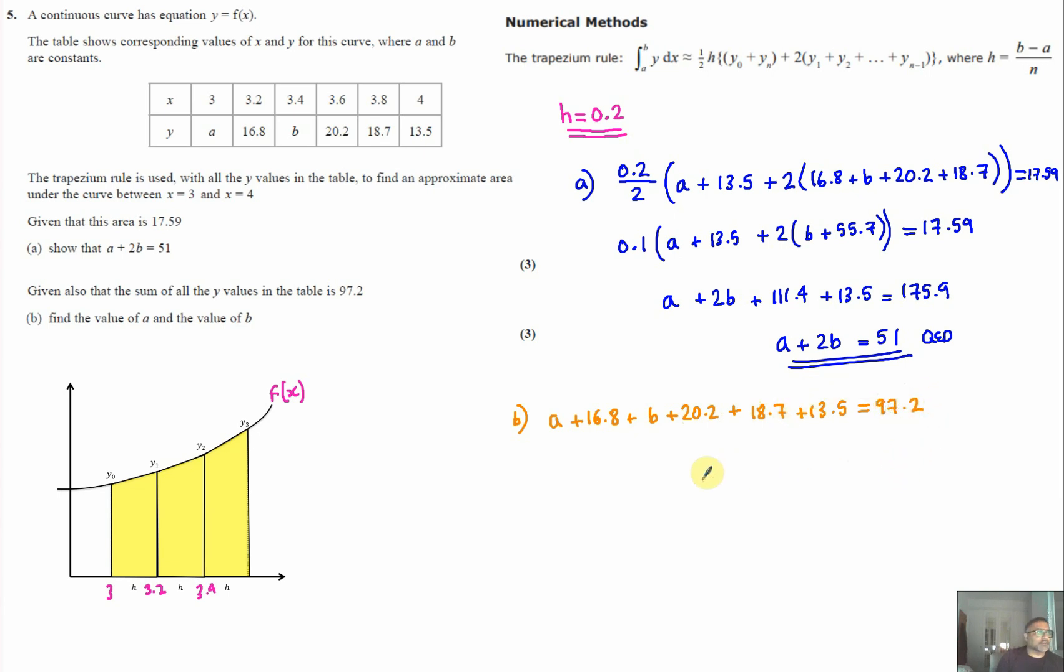Simplifying that equation, a plus b plus 69.2 equals 97.2. Subtracting 69.2 from both sides gives us a plus b equals 28.